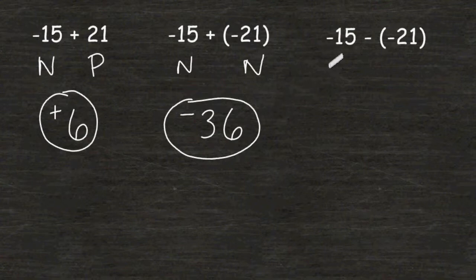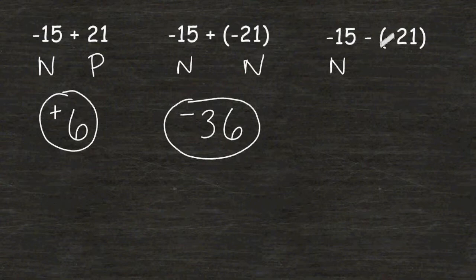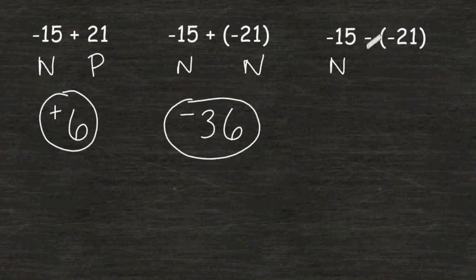In this third example, we have a negative, and after this negative 15, we are subtracting a negative. Although this 21 is negative, because it is preceded by a minus sign, we have to remember that tells us we have to do the opposite of whatever is inside these parentheses.